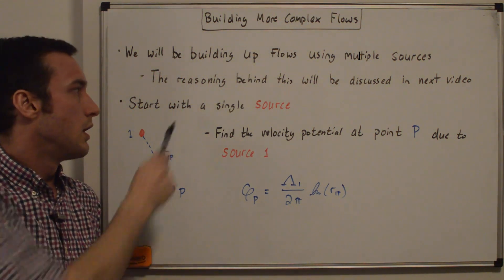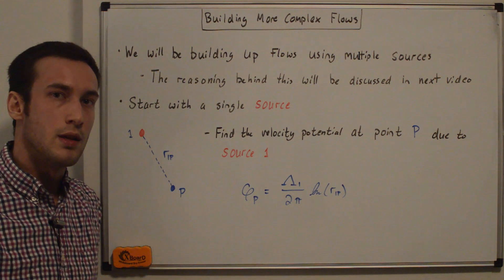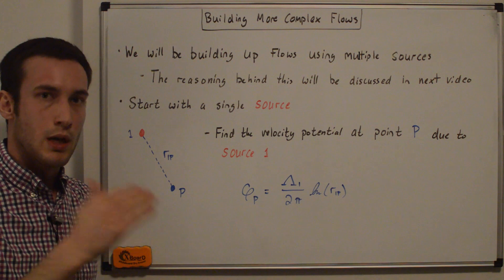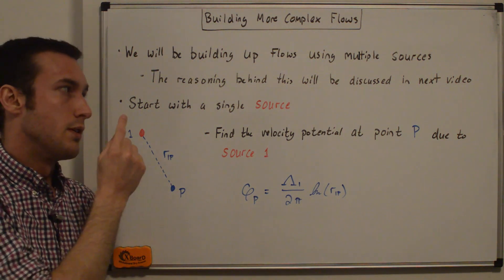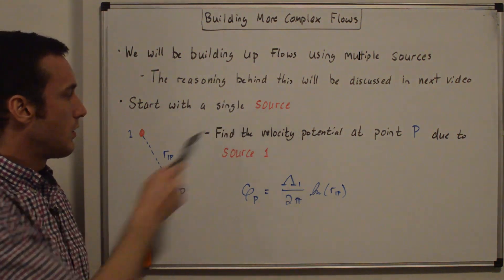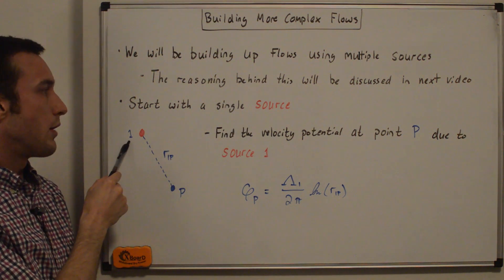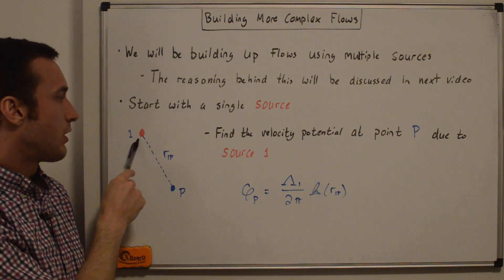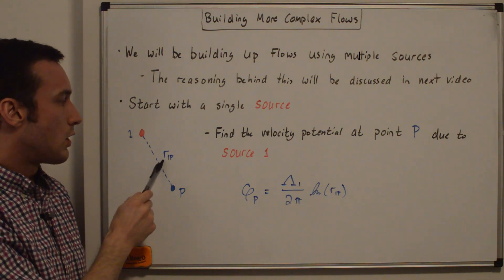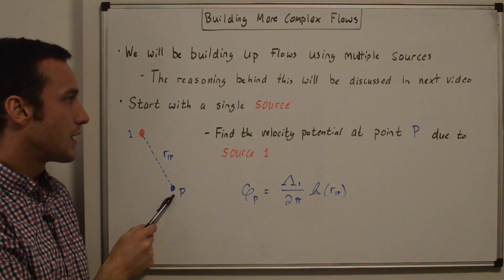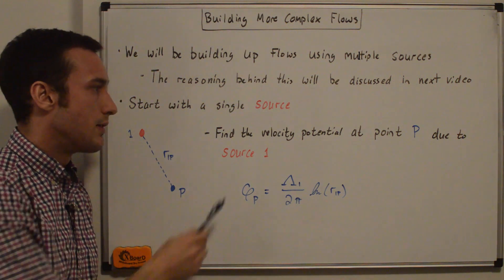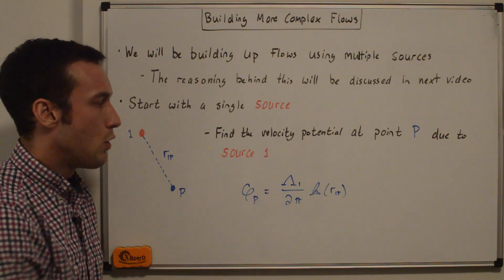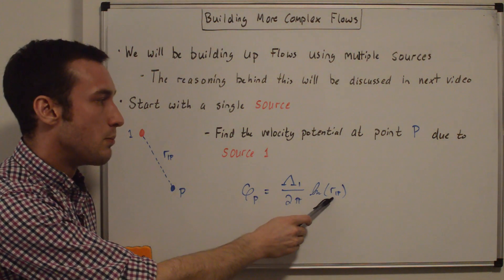We're going to start with the simplest equation, which is due to a single source. By the end of this video, you'll see the more complicated equation that includes the sources all around an airfoil in addition to the uniform flow. We start with a single source — that's point one or source one — and what we're trying to find is the velocity potential at point P due to this source one. The distance between P and one is called r_1P. The equation for the velocity potential due to a source flow is: phi_P equals lambda_1 over two pi times the natural log of the distance between point P and the source.